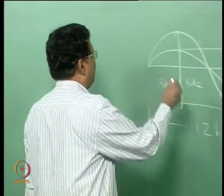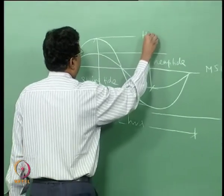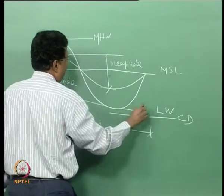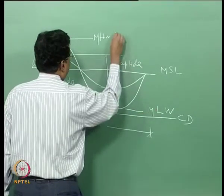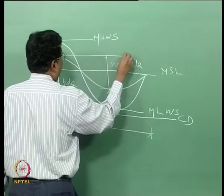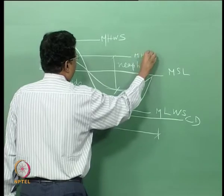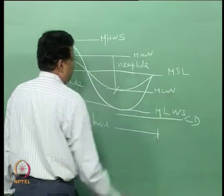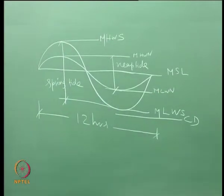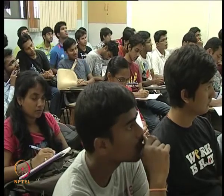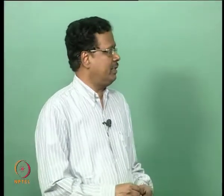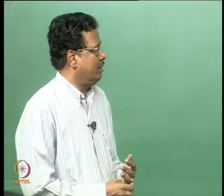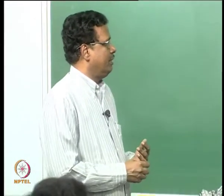Spring tide has two water levels: one is the mean high water and another is the mean low water. If you take the mean, this will be the mean high water and this is the mean low water. I have defined six levels: mean high water spring, mean high water, mean sea level, mean low water, and mean low water spring.